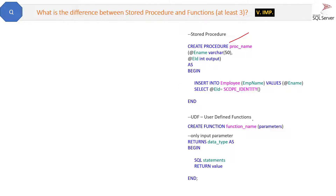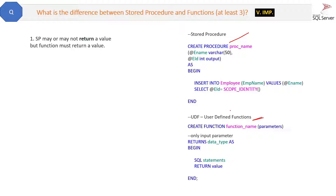When we say user defined function — basically when we say function, it can be of two types: user defined function and system defined function. Normally we refer to functions as user defined functions only, because system defined functions are used by SQL Server and are not accessible to you as a developer.